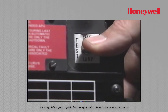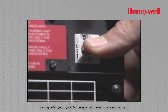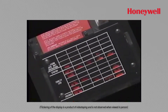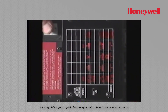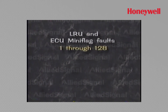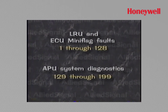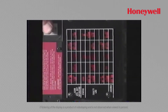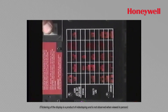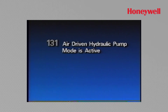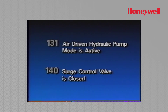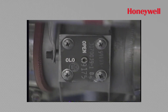With the APU still running, toggle to the lamp test position and hold down the switch to enter the mini-flag display mode. This will display mini-flags of the units that have failed during this particular run. Mini-flags below number 128 are all failed LRUs and/or errors that caused the LRU to fail, whereas any mini-flag number greater than 128 is a diagnostic mini-flag — an on-condition description of some APU operation parameter. For instance, number 131 implies that the air-driven hydraulics pump mode is active, and 140 implies that the surge control valve is closed, meaning pressure is available for the aircraft system. If low duct pressure is observed, visually confirm that the surge control valve position indicator also indicates closed.